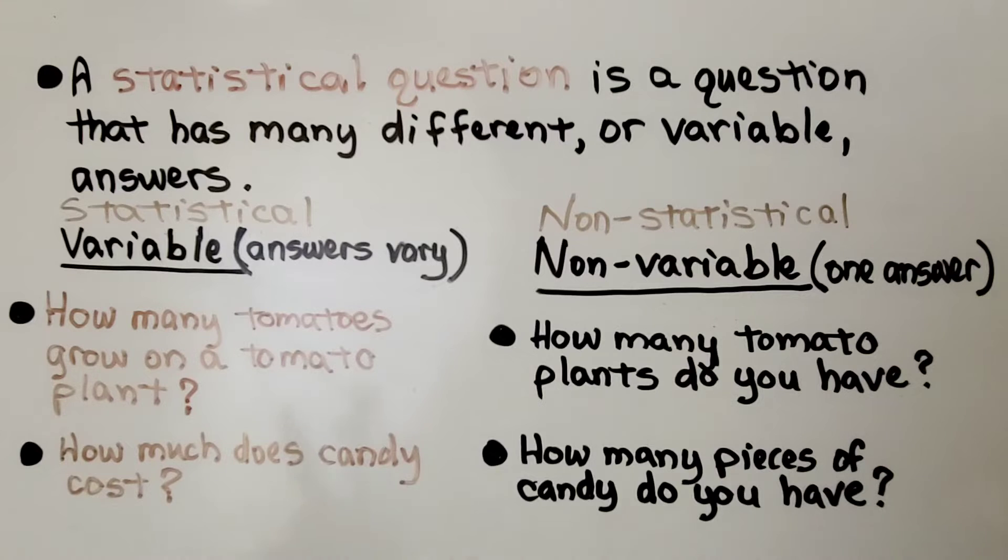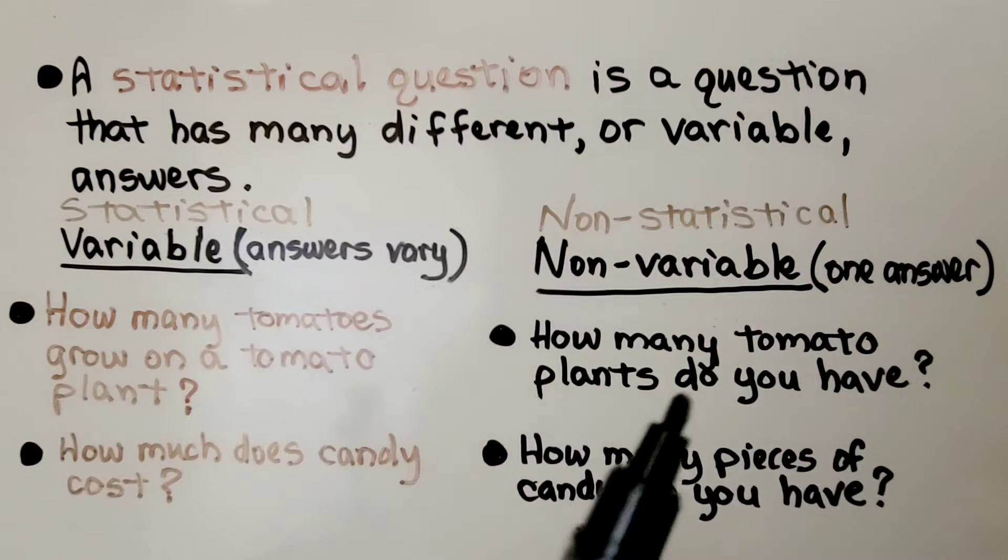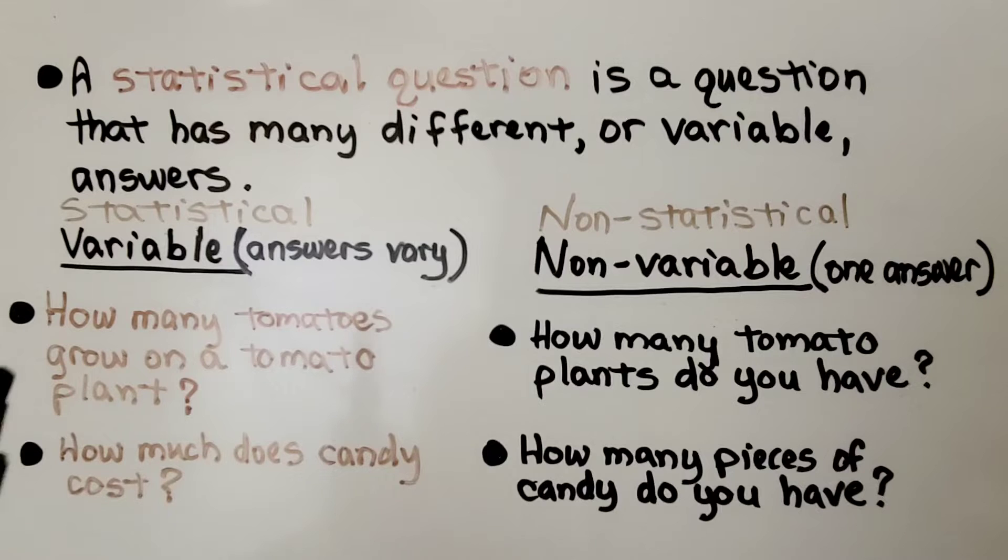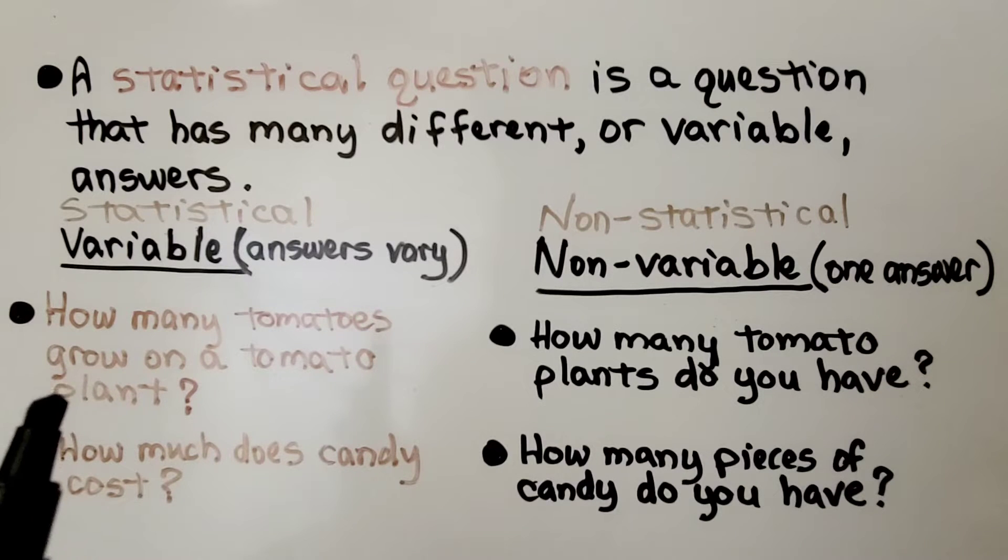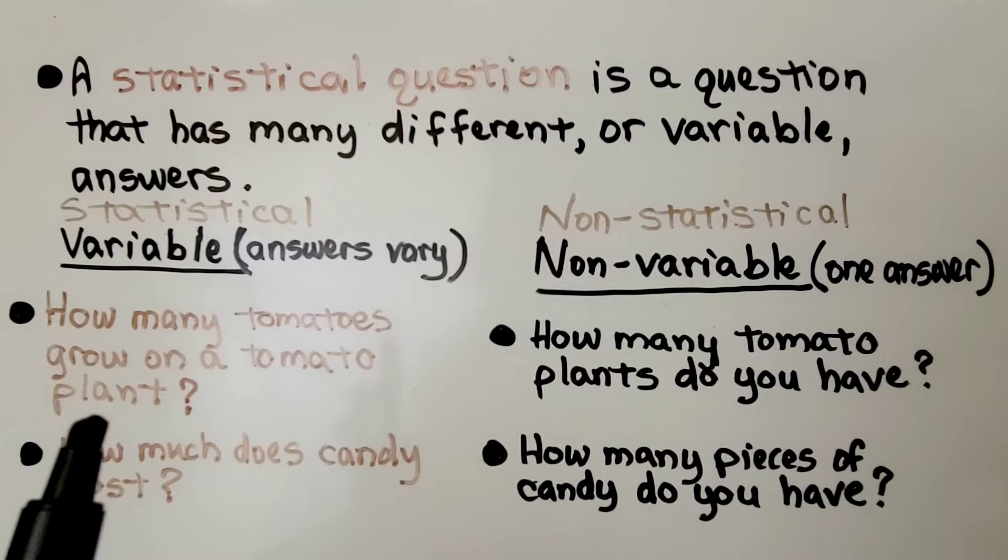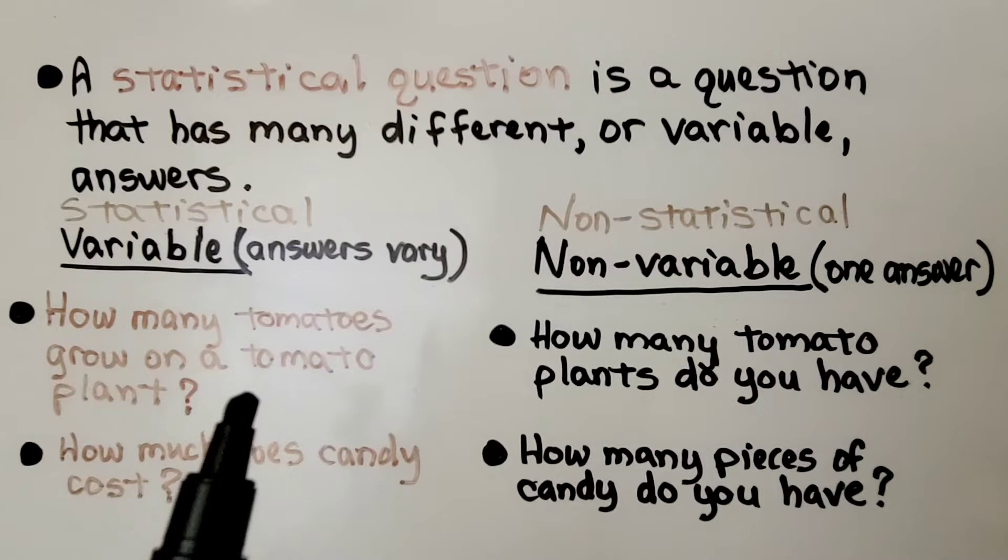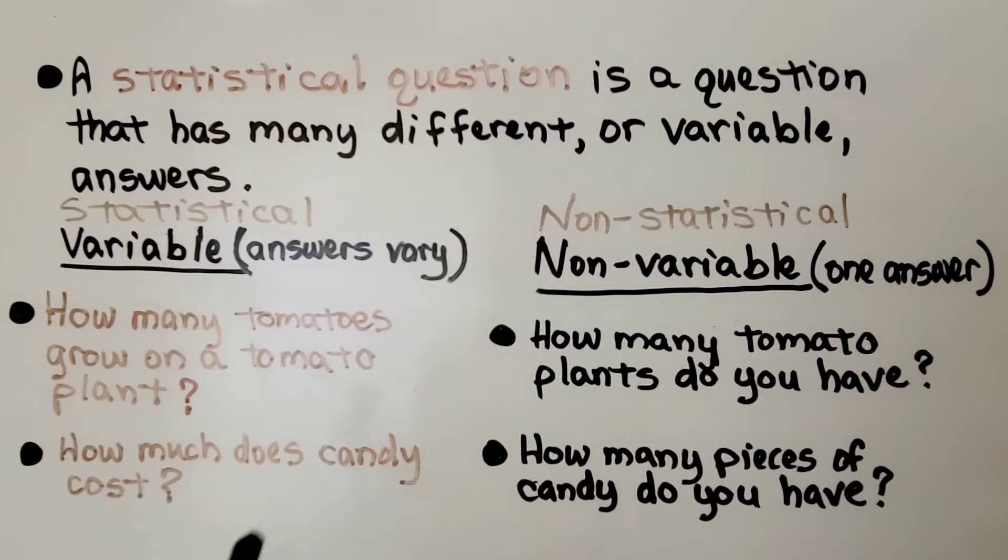Here are some examples of statistical questions and non-statistical. Statistical would be how many tomatoes grow on a tomato plant? Well, the answers vary. How much did you water it? How much sun is it getting? What type of tomato plant is it? Or how much does candy cost? What type of candy? How much candy? The answers can vary.